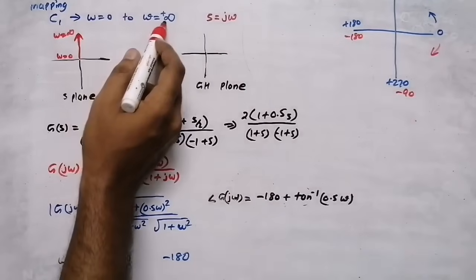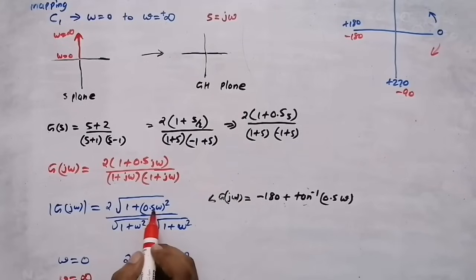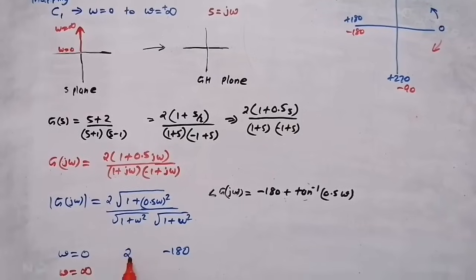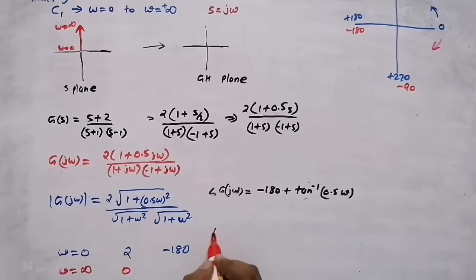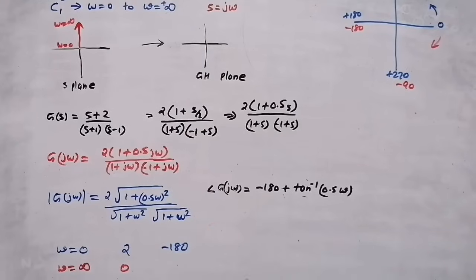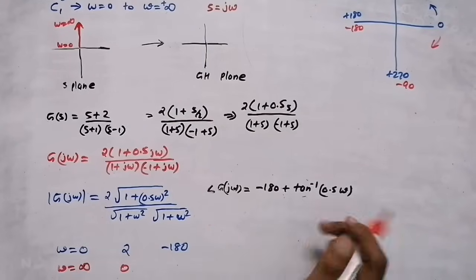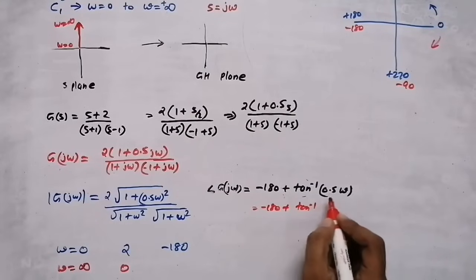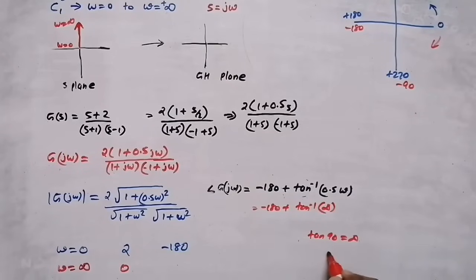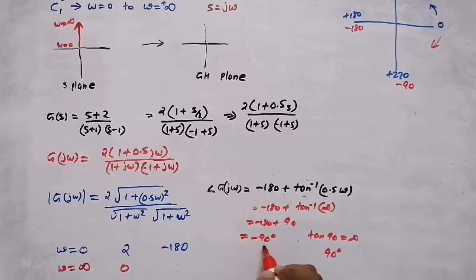At omega equal to infinity: substituting infinity in the magnitude formula, 1 plus infinity is infinity in the denominator, so 2 divided by infinity equals 0 — the magnitude is 0. For the phase angle, tan inverse (0.5 times infinity) is tan inverse infinity, and since tan 90 is infinity, tan inverse infinity is 90 degrees. So minus 180 plus 90 gives minus 90 degrees.